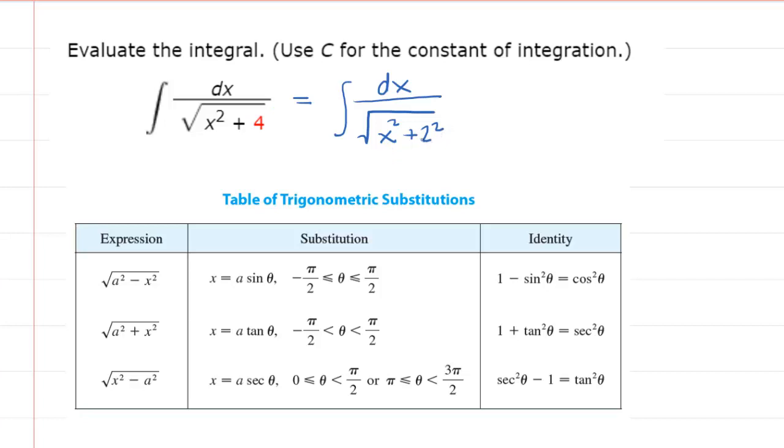So then after doing that you would look at your expressions in the left hand column and try to find the one that matches the one in your problem. So in our case we have a constant squared plus x squared underneath the square root. And that's exactly what this expression is right here. We have the square root of a constant squared plus a variable squared.